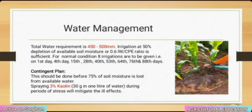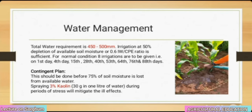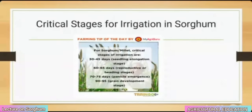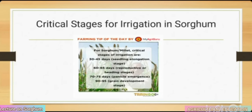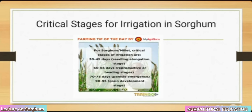Contingent plan: irrigation should be done before 75% of soil moisture is lost from available water. Spraying 3% kaolin (30 g in 1 litre of water) during periods of stress will mitigate the ill effects. Critical stages for irrigation in sorghum: 20–45 days (seedling elongation stage), 60–65 days (reproductive or heading stage), 70–75 days (panicle emergence), 90–95 days (grain development stage).